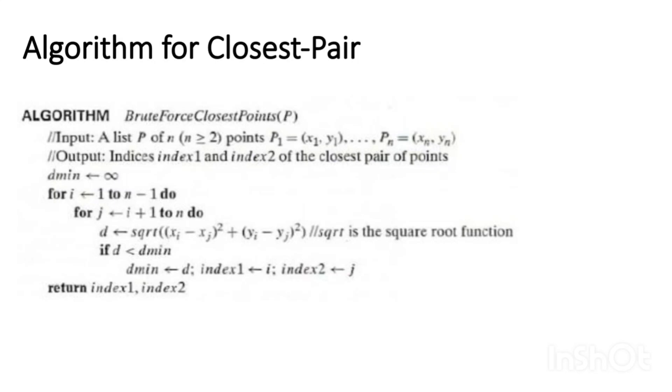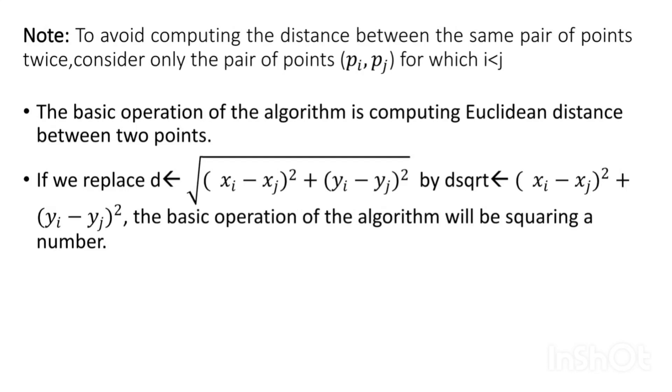If distance is less than minimum distance, minimum distance is equal to distance. Index1 is equal to i, index2 is equal to j. Return index1 and index2. To avoid computing the distance between the same pair of points, we consider only the pair of points pi comma pj which i is less than j.